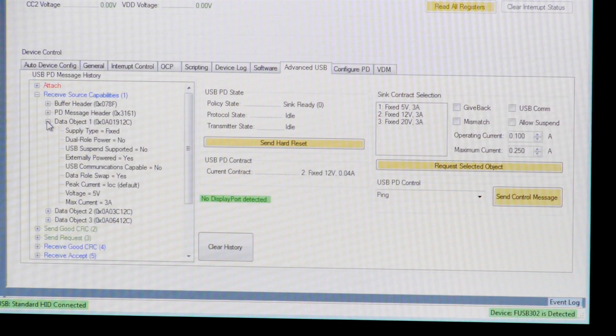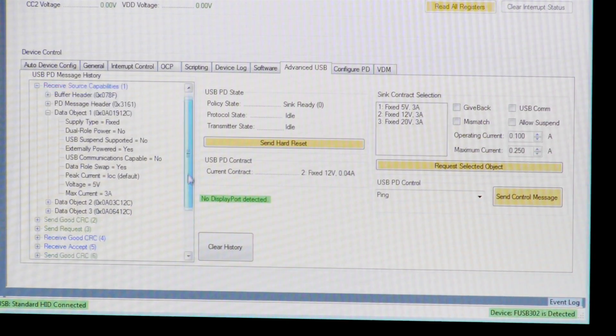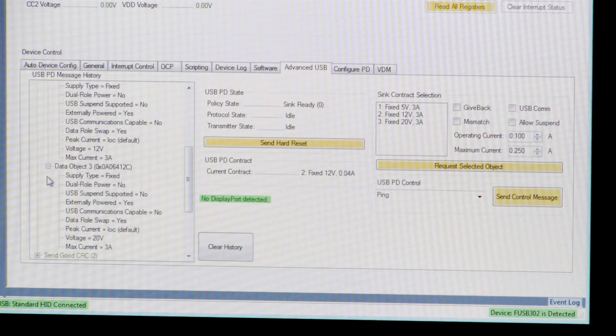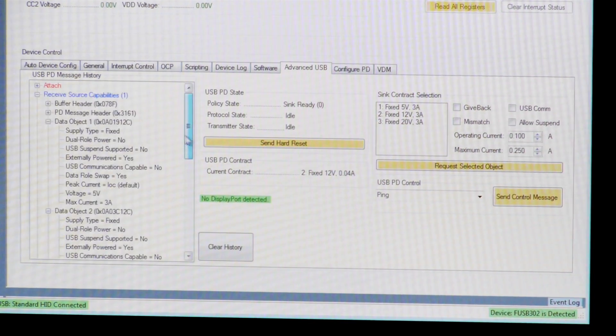Power delivery, or PD, is a communication protocol designed to manage power between a source and a sink. Here, the source is telling the sink what capabilities it can provide. In this case, the charger is capable of 5 volts, 12 volts, and 20 volts, all at 3 amps.